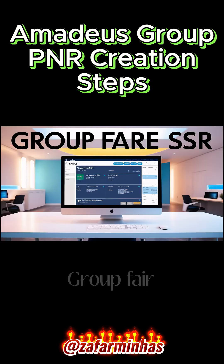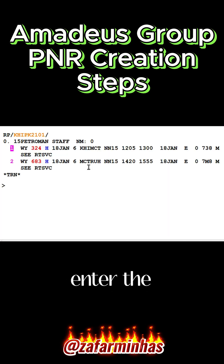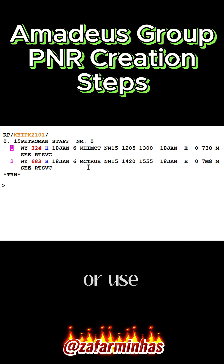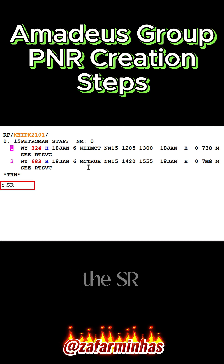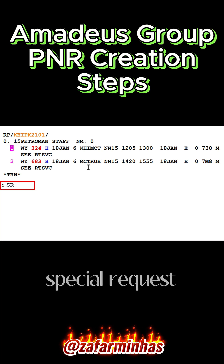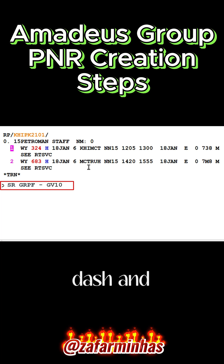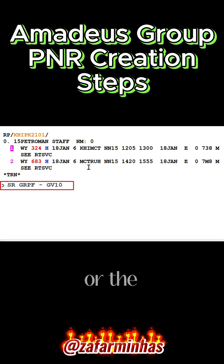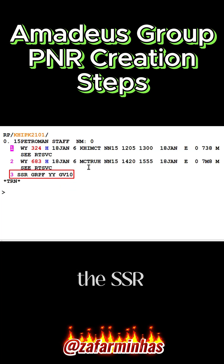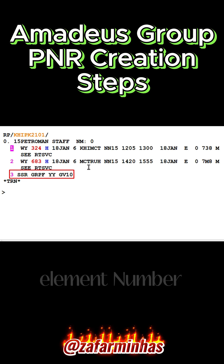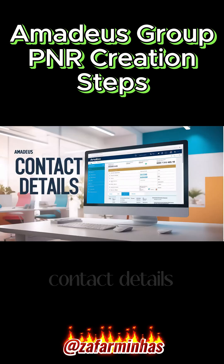Step 3: Group Fare SSR. Enter the SSR for the group fare provided by the airline, or use a published fare base. To do this, use the SR transaction for special request, followed by the 4-letter code GPRVF (the group fare), a dash, and then GV10 — the group fare code provided by the airline or the fare base used. The SSR element is updated as element number 3.